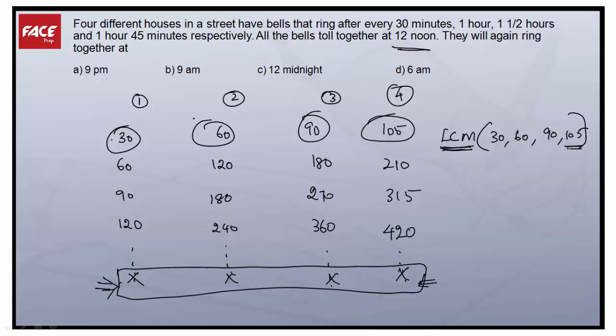So 105 is the largest number here. I'll check with 105. So 210 is not the common multiple, 315 is not a common multiple, 420 is not a common multiple. Next will be 525, this is not a common multiple. Next will be 630.